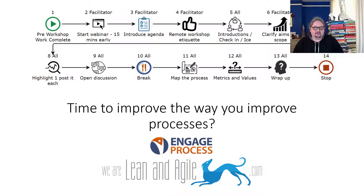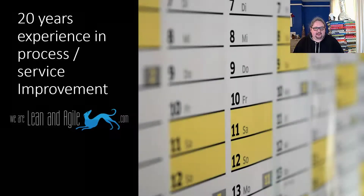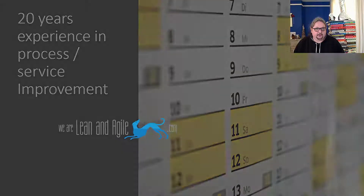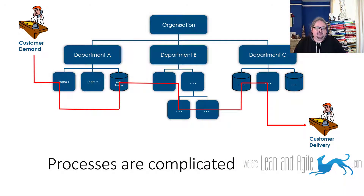Hello, I'm Andy Sanford from We Are Lean and Agile, and I'm here today to explain quickly how you can better improve your business processes using a tool called Engage. I have over 20 years experience of delivering process improvement in the public and private sector. Processes underpin everything we do in every organization — it starts with customer demand and goes through to customer delivery, but during that process it might bridge multiple organizational silos, which makes these difficult to manage, understand, and capture.